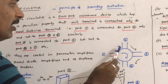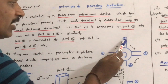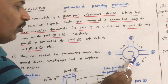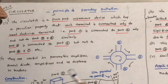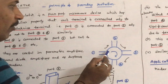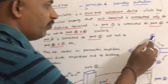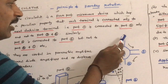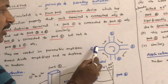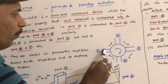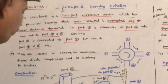Port 1 is connected to port 2, but not to port 3 and port 4. Similarly, port 2 is connected to port 3 and port 3 is connected to port 4 only. Port 4 is connected to port 1 only. So if the signal is fed into port 1, it will come out of port 2 only and will not come out of port 3 and port 4.